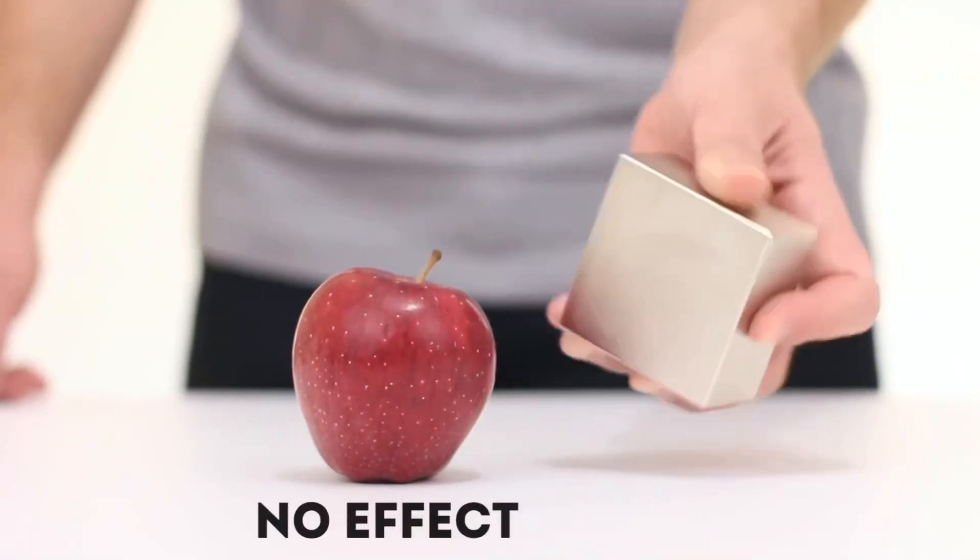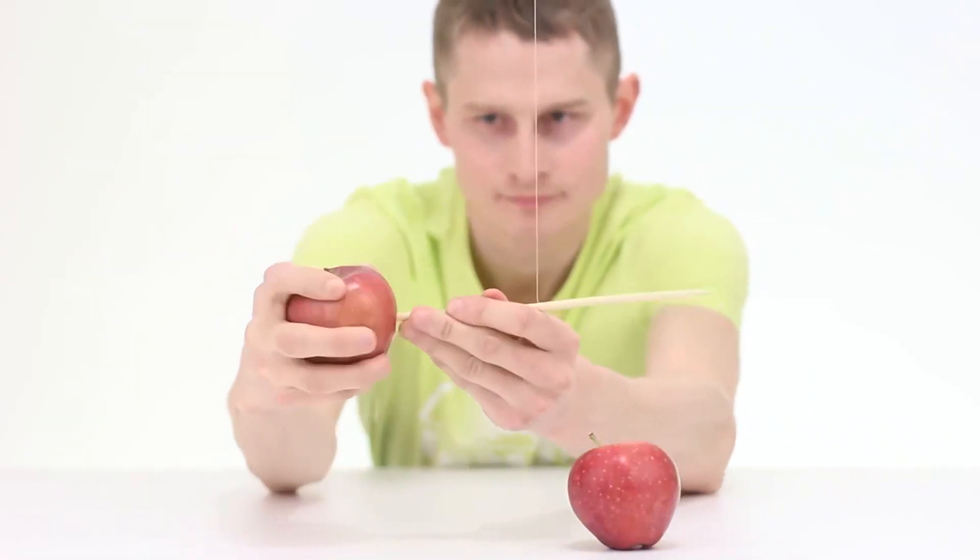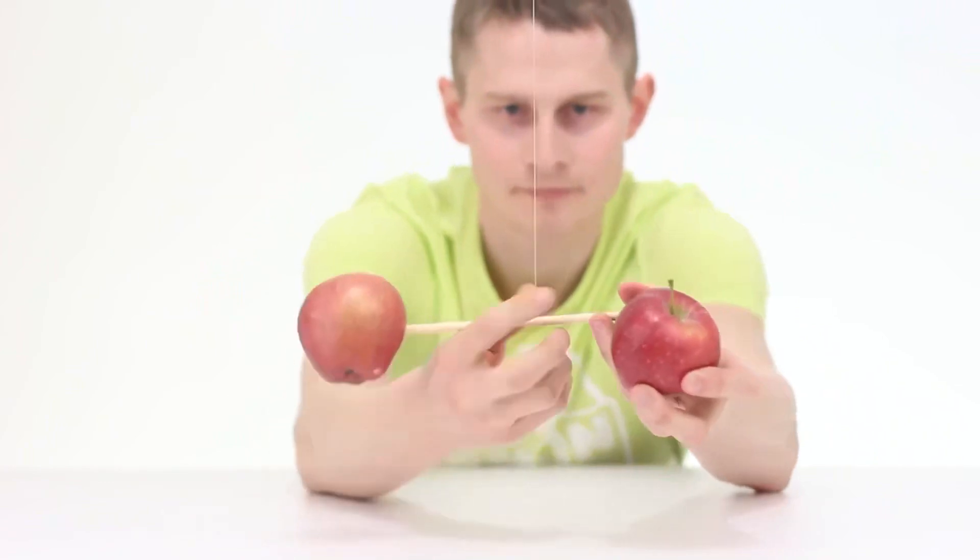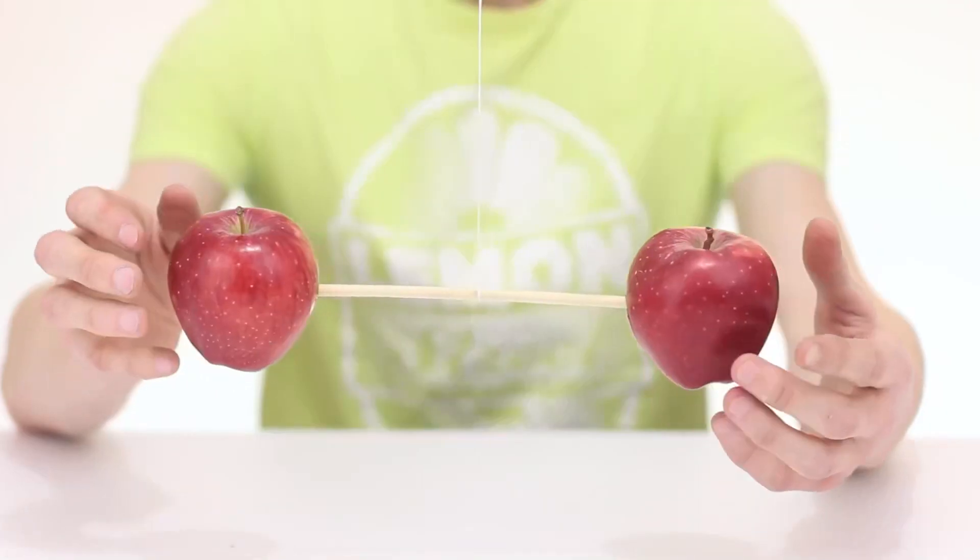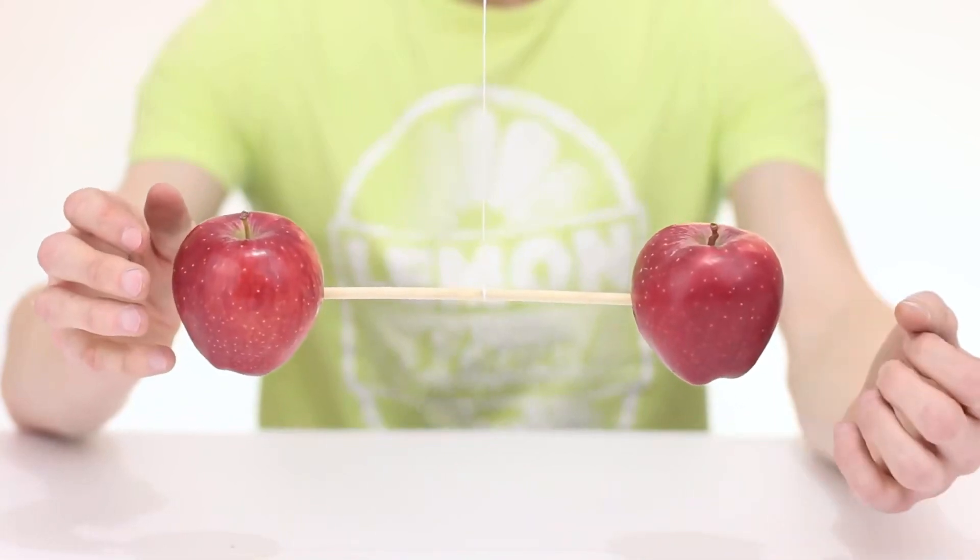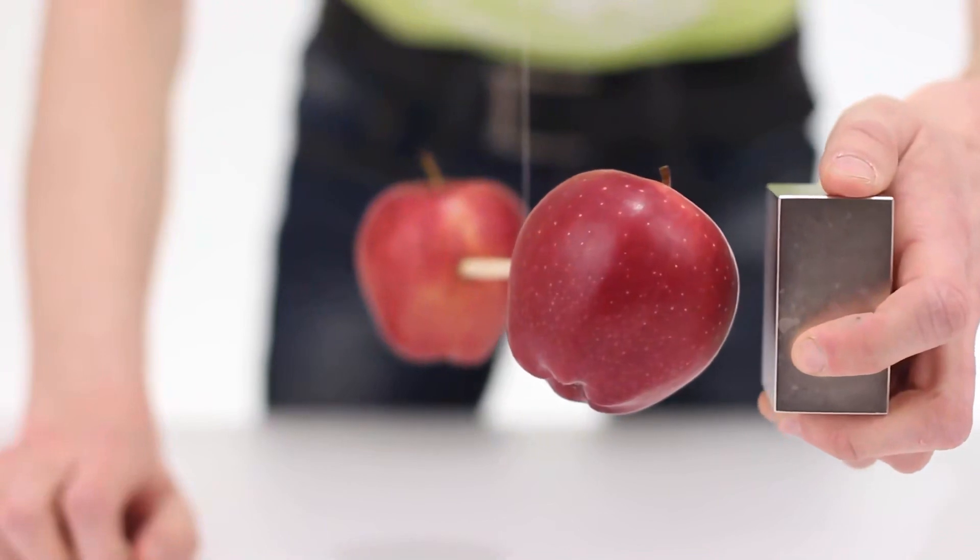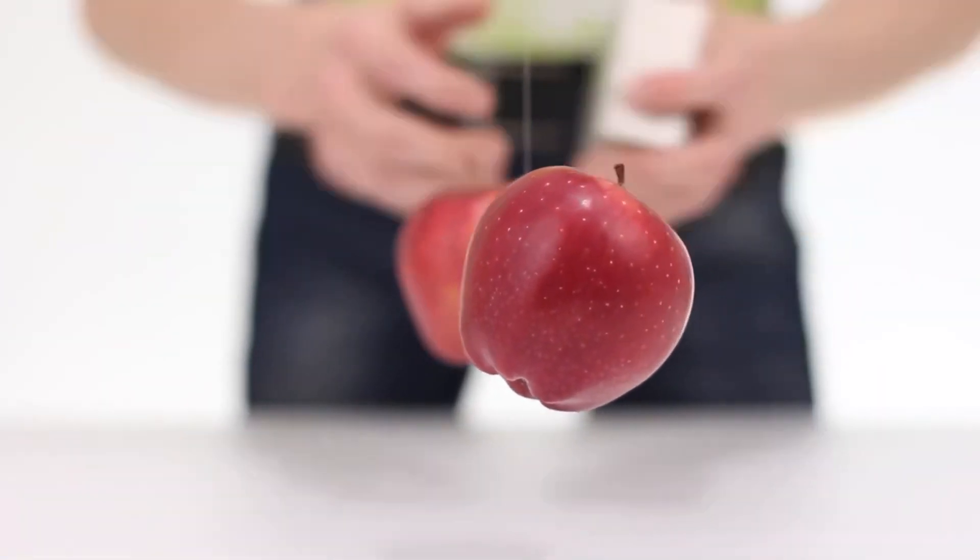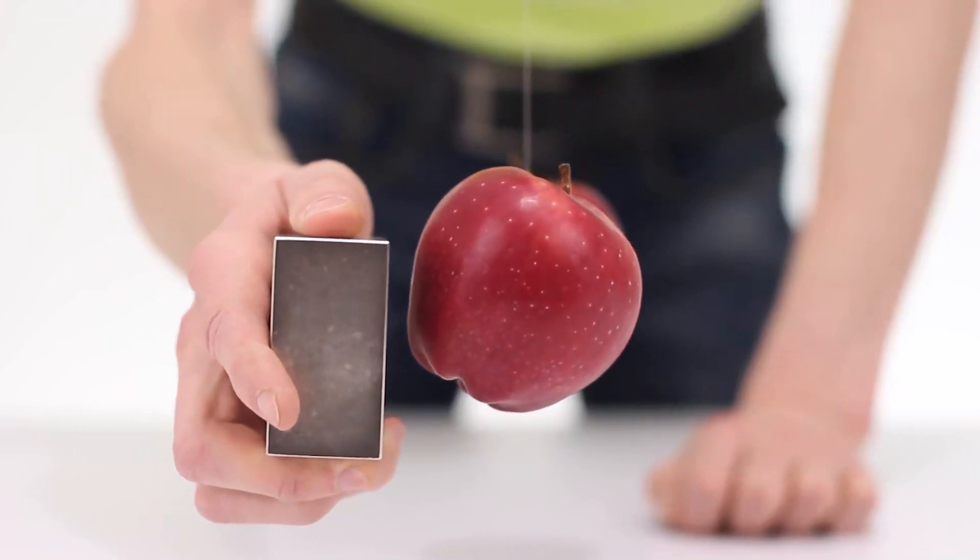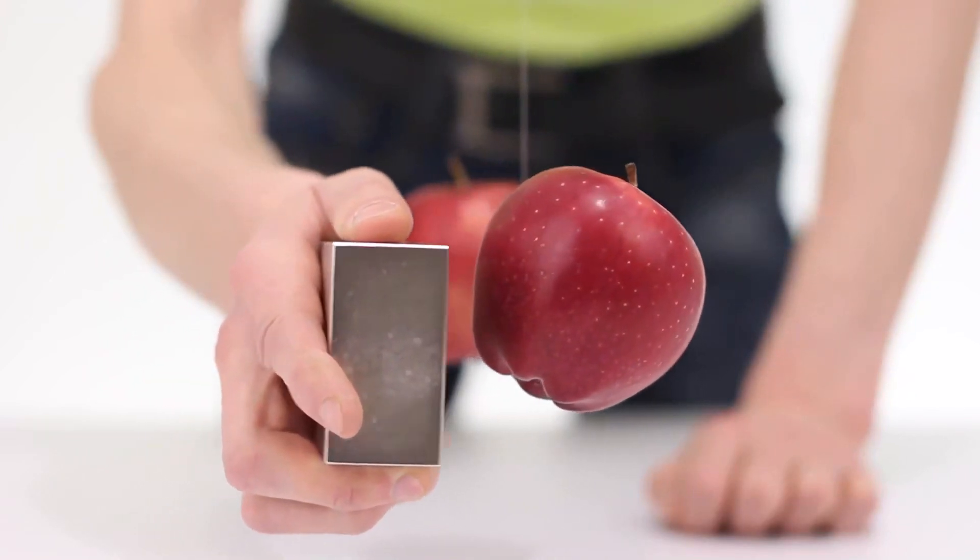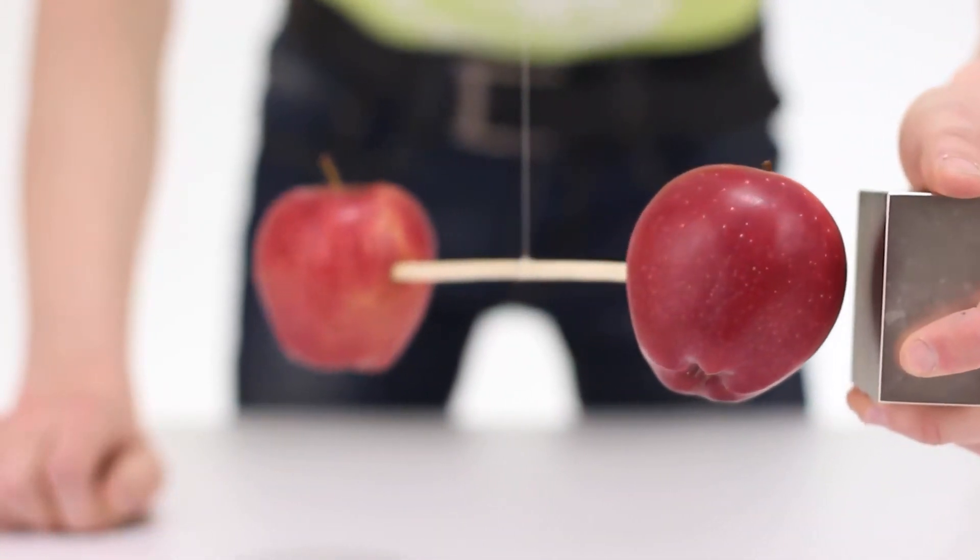Let's take an ordinary apple and a large magnet. Of course, the magnet does not affect the apple in any way. But what if you put two apples on a wooden stick and balance them in the air? Now, you can see that the magnet still causes small fluctuations in the apple. It seems that there really is a lot of iron in this fruit. This trick is also great with grapes. Who would have thought that fruits and berries can be magnetic?